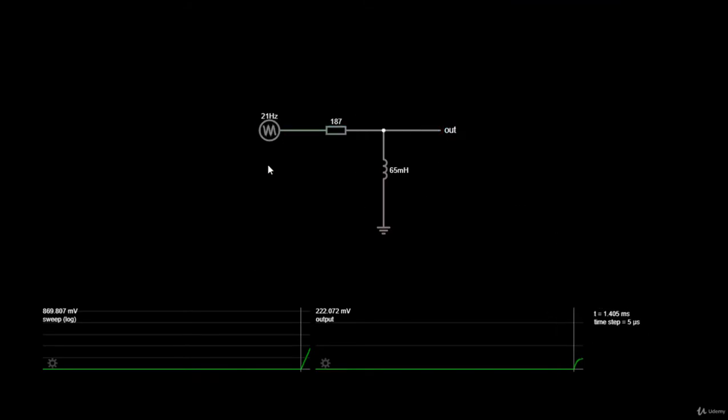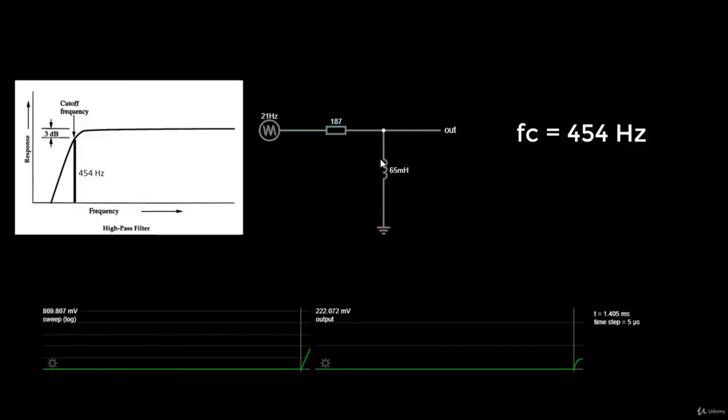Now, let's simulate this high-pass RL filter and see the output signal in comparison with the input signal. The cutoff frequency based on the value of the resistor and the inductor is 454 Hz. So this means that everything below this frequency will be attenuated, and everything above this frequency will be passed.